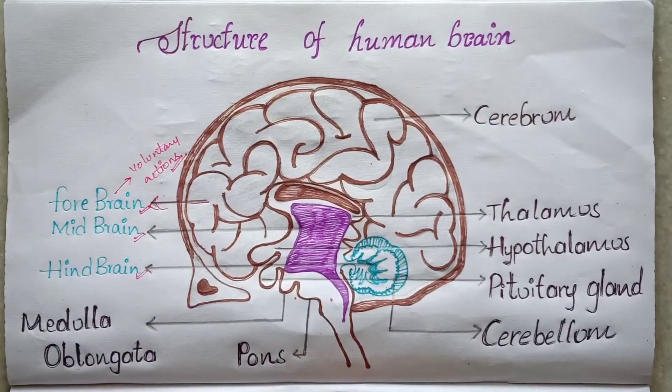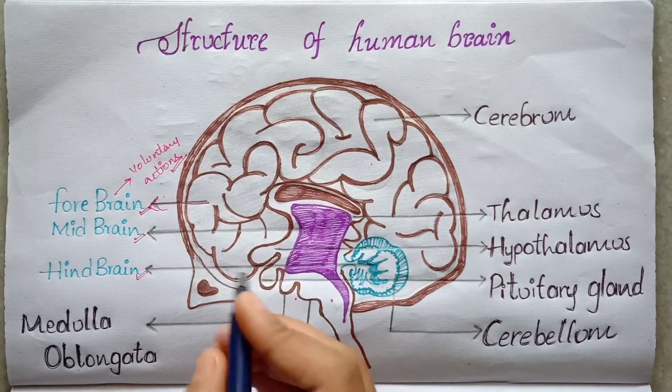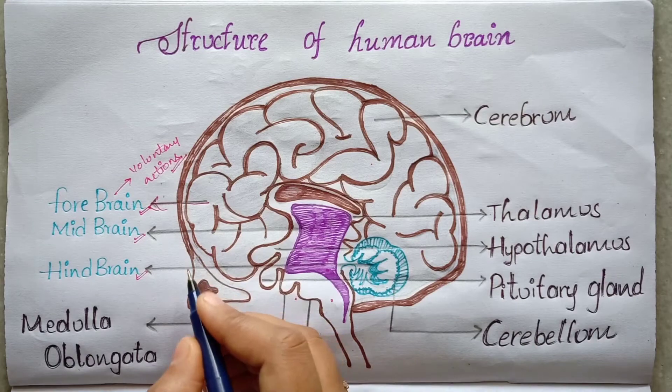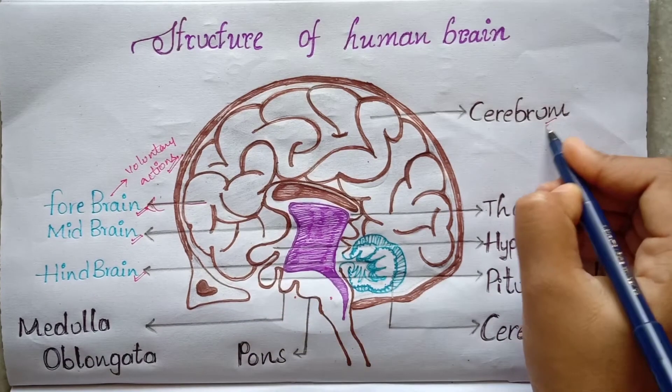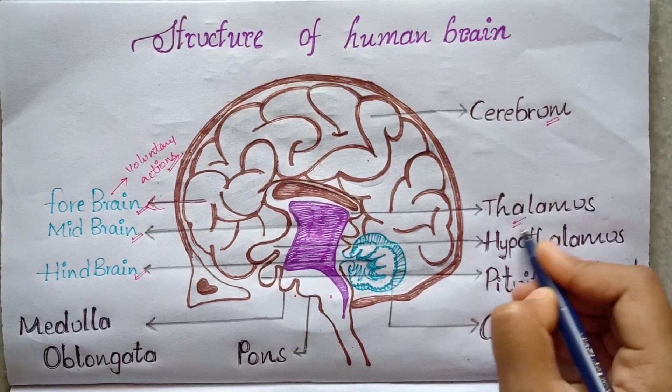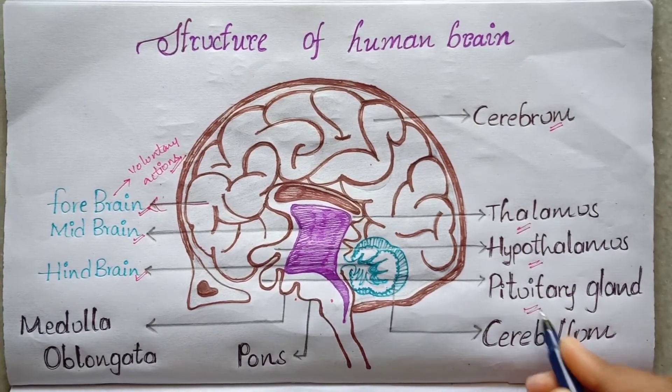Forebrain is further divided into cerebrum, thalamus, hypothalamus, and pituitary glands. The larger section is the cerebrum.